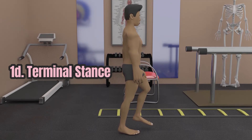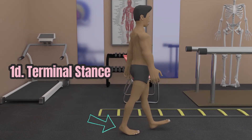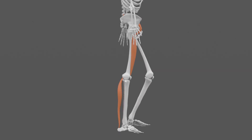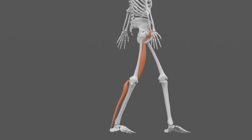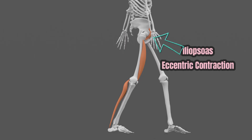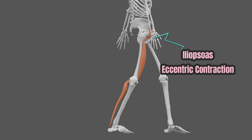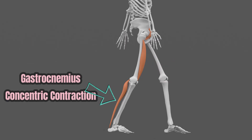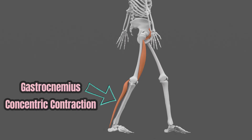After the mid stance comes the terminal stance. It starts when the heel rises off the floor and ends when the opposite heel strikes the ground. The iliopsoas here performs an eccentric contraction for a smooth and controlled hip hyperextension. The quadriceps does an eccentric contraction for a smooth and controlled neutral position to flexion position of the knee in preparation for pre-swing. Finally, the gastrocnemius switches to a concentric contraction for preparation to a forceful pre-swing.